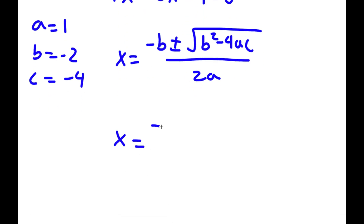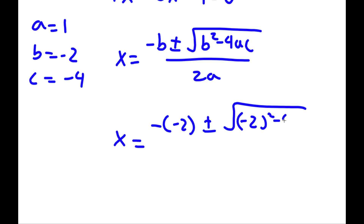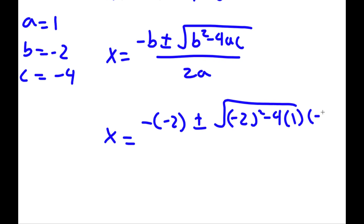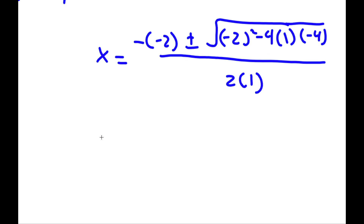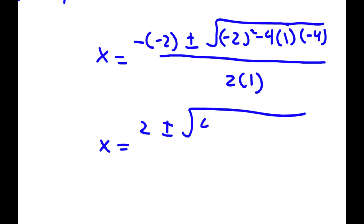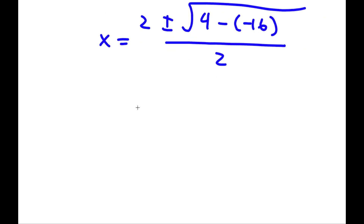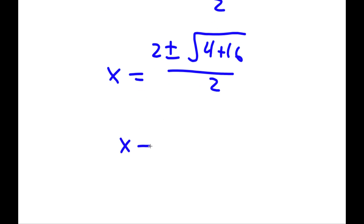So I have x is equal to negative b — so negative negative 2 — plus or minus the square root of b squared, so negative 2 squared, minus 4 times a, which is 1, times c, which is negative 4, all over 2a, so 2 times 1. Now x equals positive 2 plus or minus the square root of — negative 2 squared is positive 4, minus 4 times 1 is 4 times negative 4 which is negative 16 — all over 2. So 4 minus negative 16 is 4 plus 16, which is 20. So x equals 2 plus or minus the square root of 20, over 2.